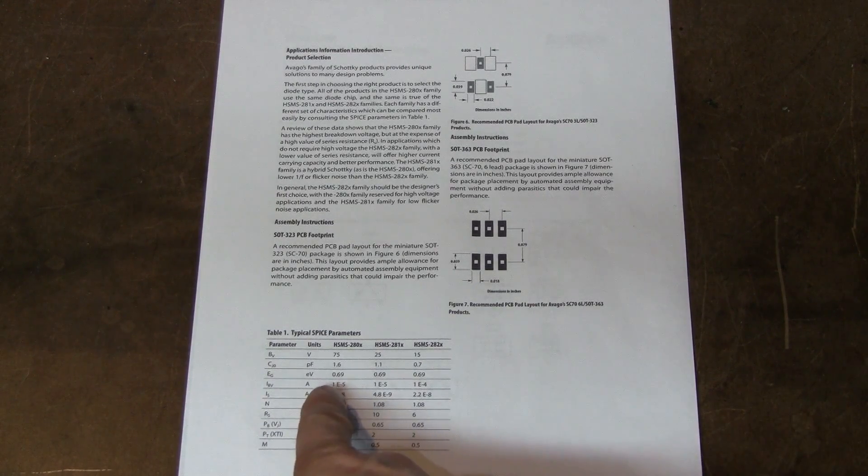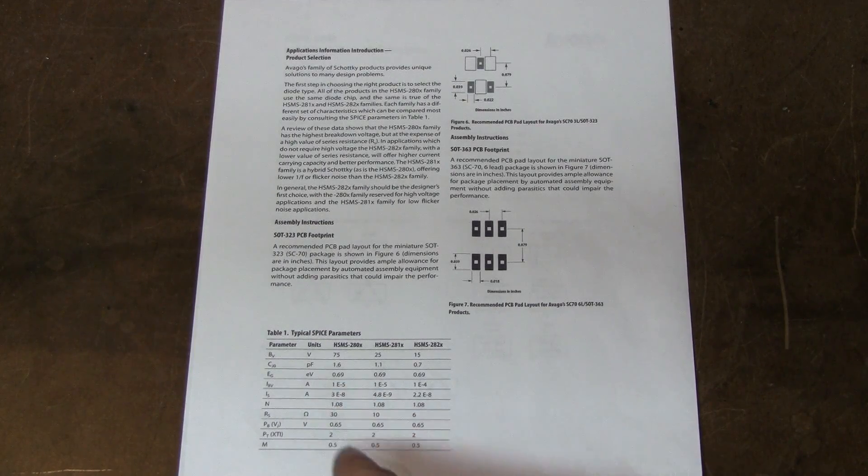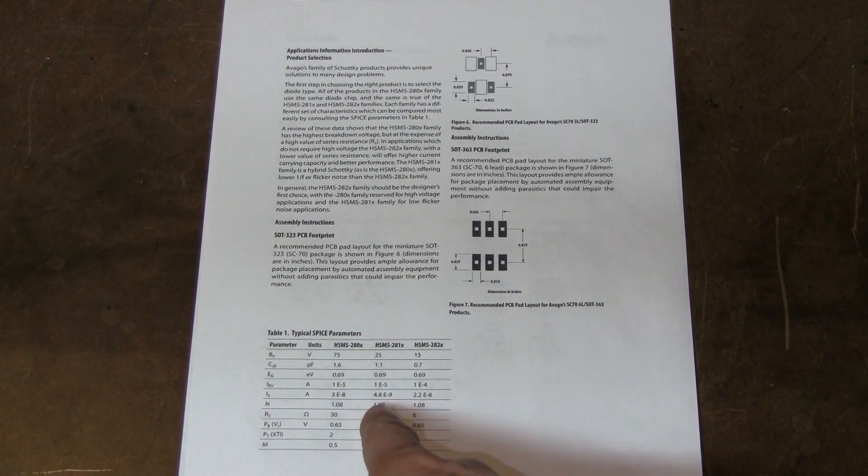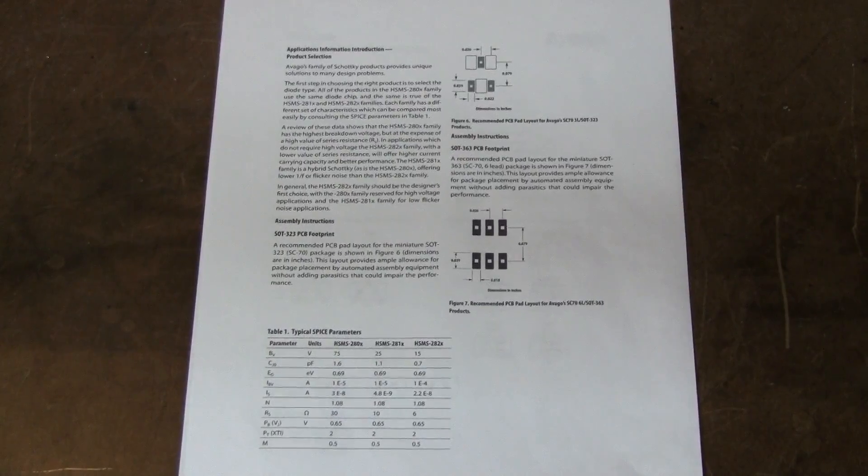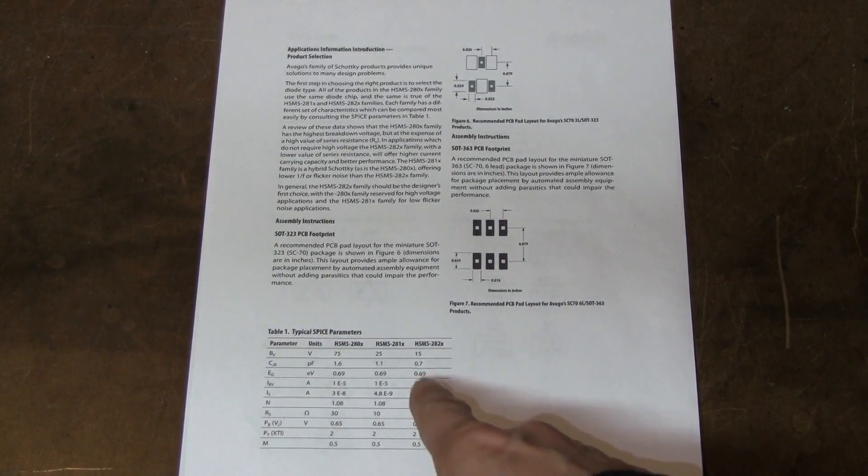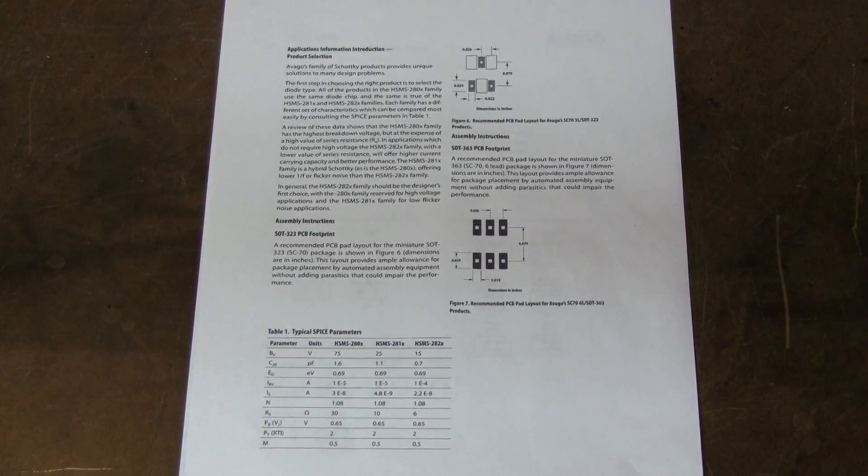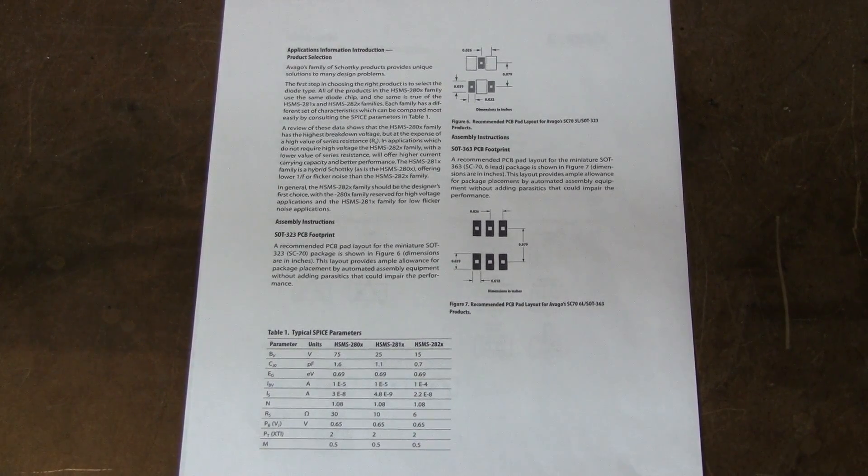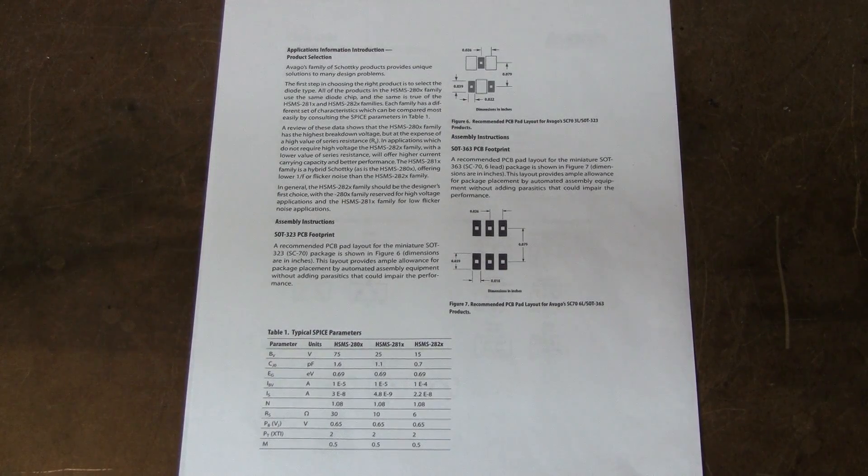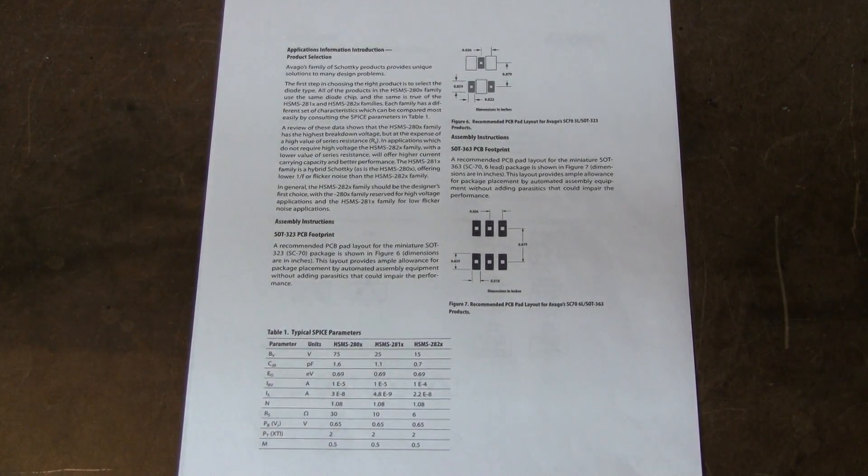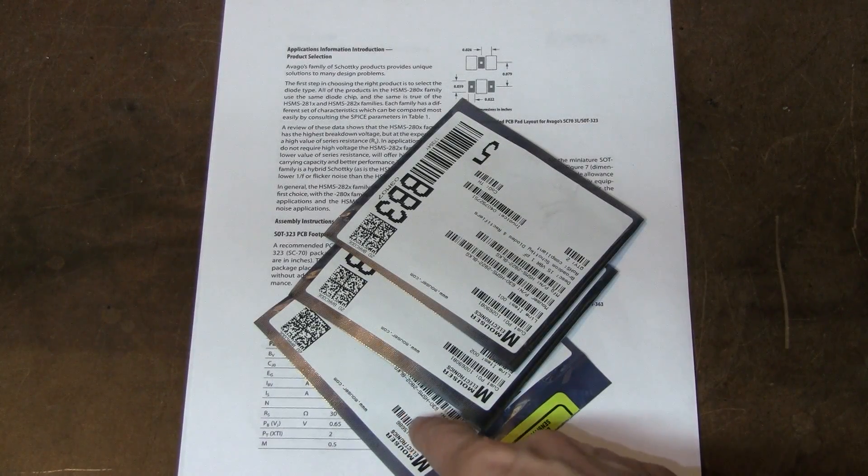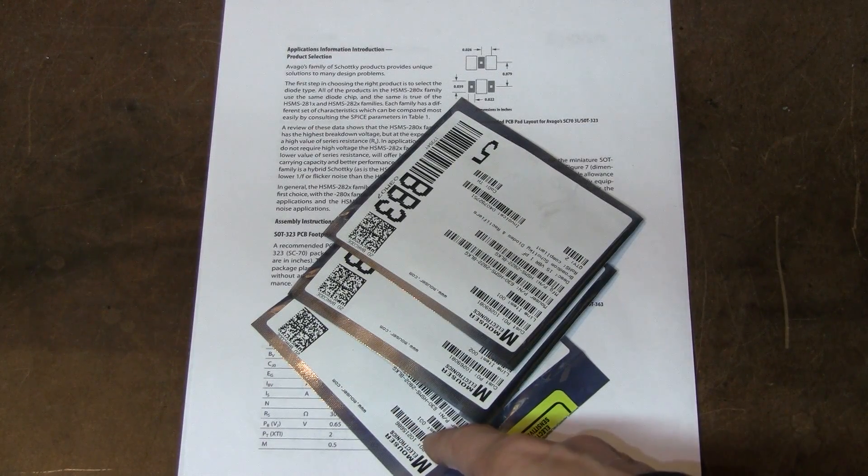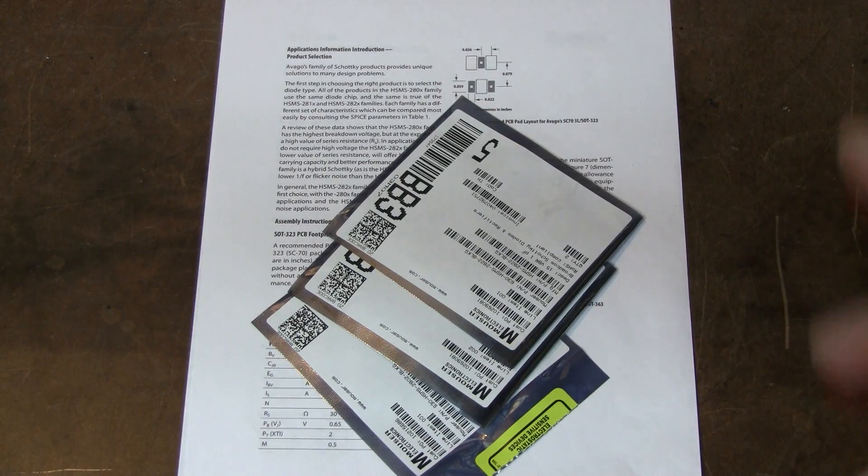I used diodes from this family but then I thought it would be a better idea to use this family with lower capacitance and resistance and maybe even this family but this family has higher noise so I'm not so sure about it. Here I have all three families and the diodes from this family are already installed. Let's try the other two and compare the results.